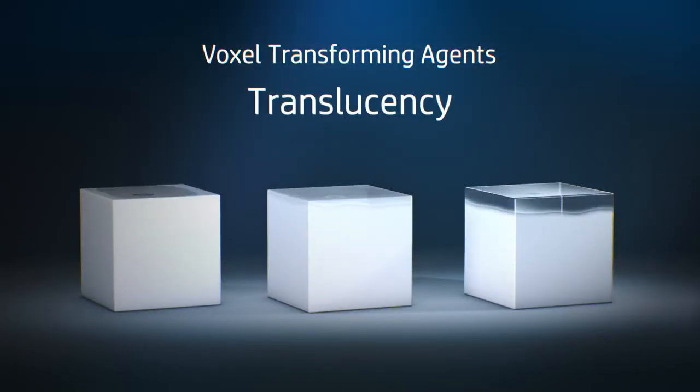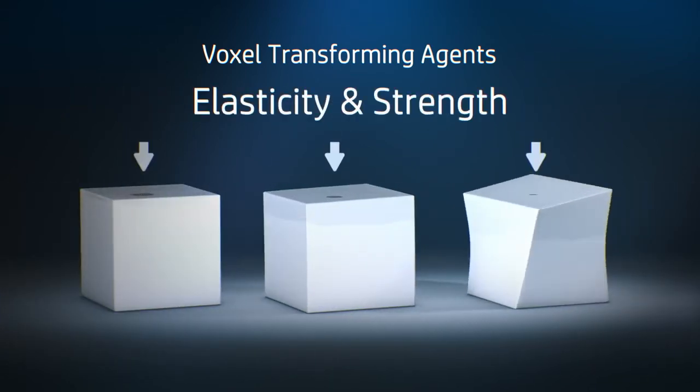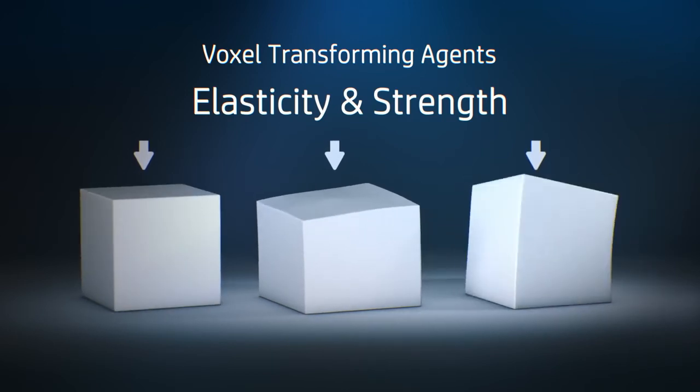The Transforming Agents could control the translucency of each voxel, enabling the printing of lenses or sensors. We could also optimize the strength and stiffness in portions of a part and print elastic voxels in other portions of the part.